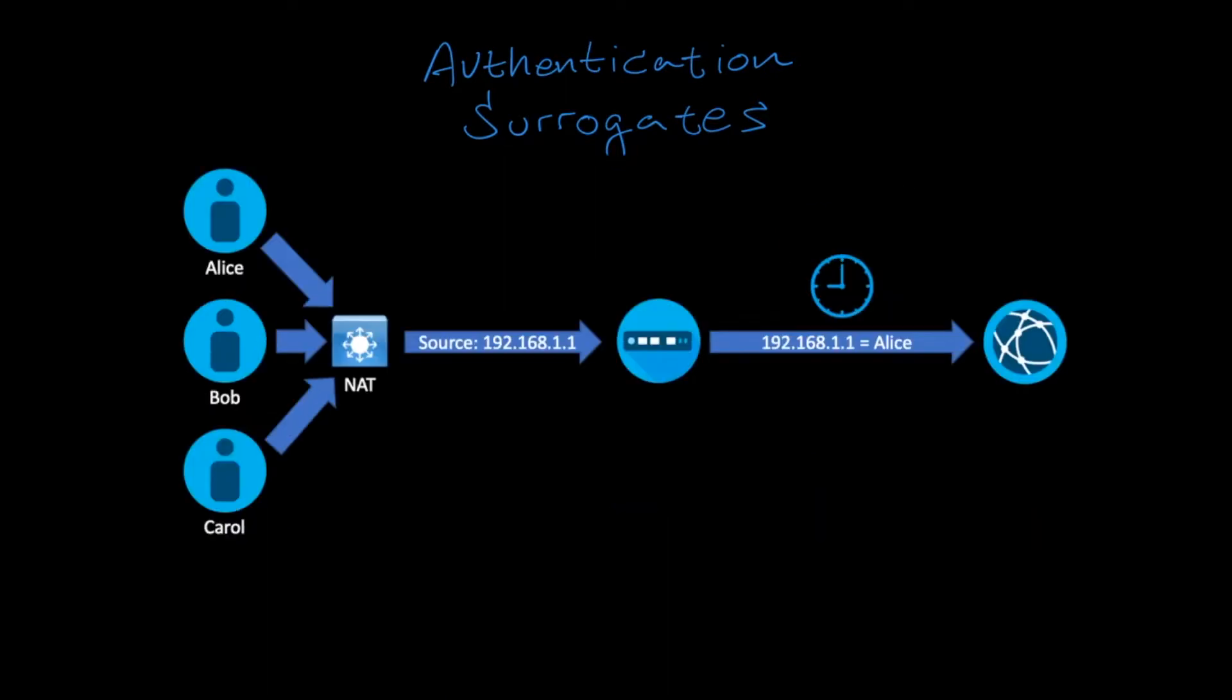Similarly, if there is a NAT device between the clients and the WSA, or DHCP leases are set very low and device IPs change often, IP surrogates are not going to work very well.